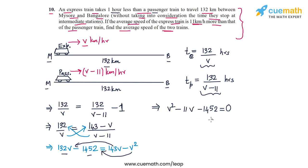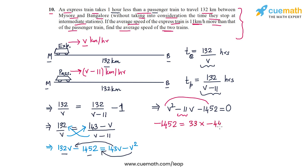To solve this quadratic equation, we can use the quadratic formula or factorize by splitting the middle term. We need two numbers whose sum equals minus 11 and whose product equals 1 times minus 1452. Playing around with the factors of minus 1452, we find that minus 1452 can be written as 33 times minus 44, and the sum of these numbers is minus 11.